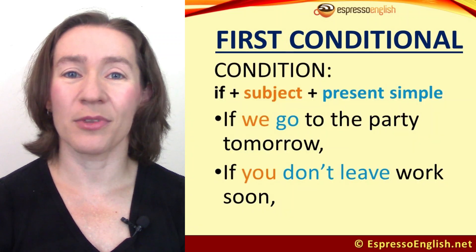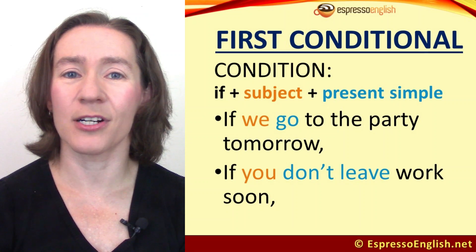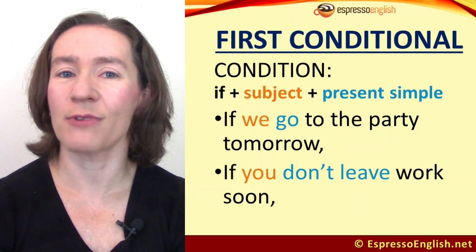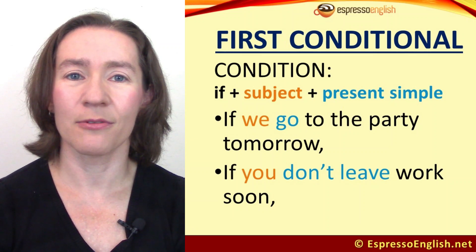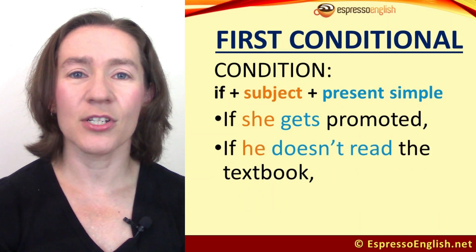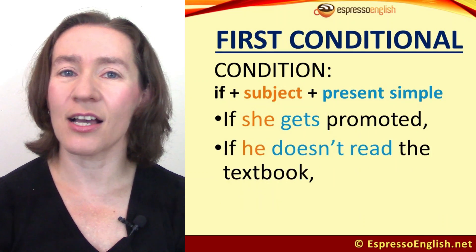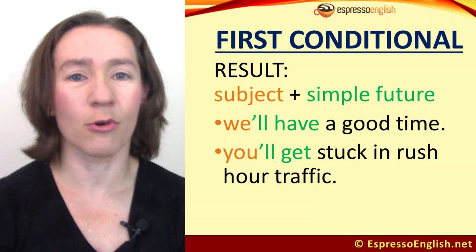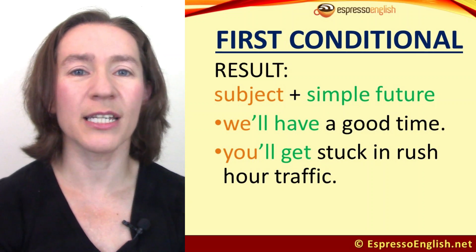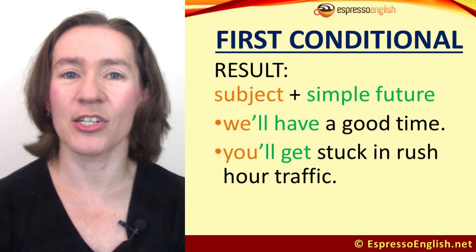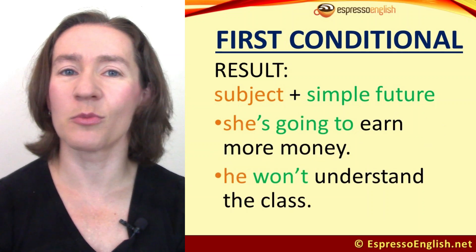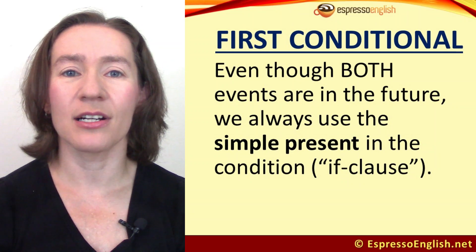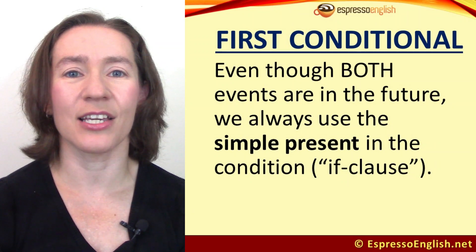Let's look at how to form the first conditional. Pay close attention to the correct verb forms. The condition is: if + subject + present simple — for example, 'if we go to the party tomorrow,' 'if you don't leave work soon,' 'if she gets promoted,' 'if he doesn't read the textbook.' The result is: subject + simple future (will, won't, or going to / not going to) — 'we'll have a good time,' 'you'll get stuck in rush hour traffic,' 'she's going to earn more money,' 'he won't understand the class.' Notice that even though both events are in the future, we always use the simple present in the IF clause.